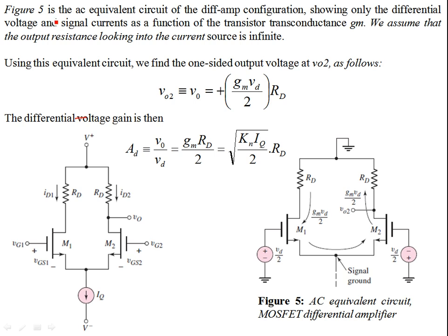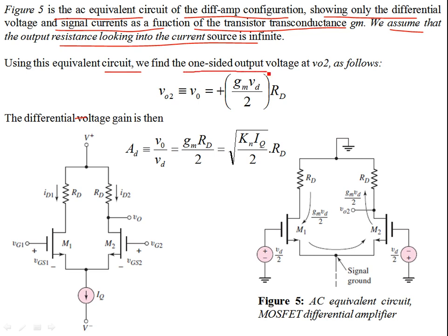Figure 5 shows the AC equivalent circuit of the difference amplifier configuration, showing only the differential voltage and signal currents as a function of the single transistor transconductance GM. We assume the output resistance looking into the current source is infinite. To derive the AC circuit, we kill all DC sources (they become signal ground), and then the difference signal VD = V1 − V2 appears as VD/2 at each gate terminal of M1 and M2.